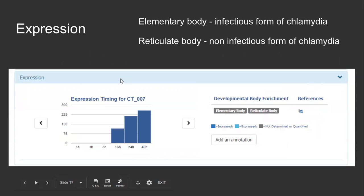The expression module highlights two types of data. On the left, we display expression timing data — the experimentally determined abundance of the protein at a particular time point. In this example, CT007 is most abundant after 40 hours. On the right, Clambase will display the form in which this protein is expressed. The protein could be expressed in the elementary body form, the infectious form, or the reticulate body, the non-infectious form. This type of data benefits greatly from community annotation.